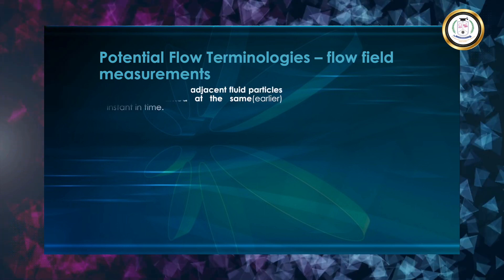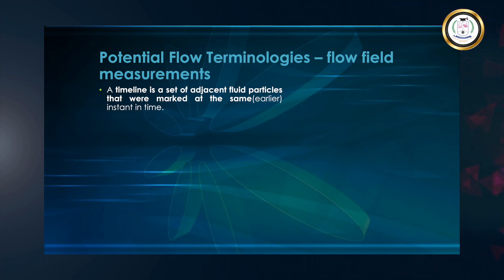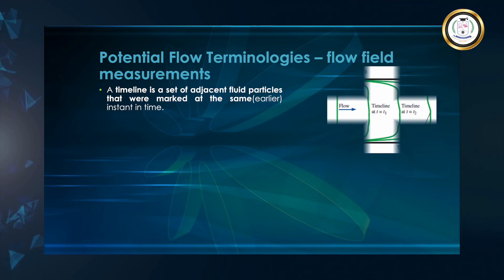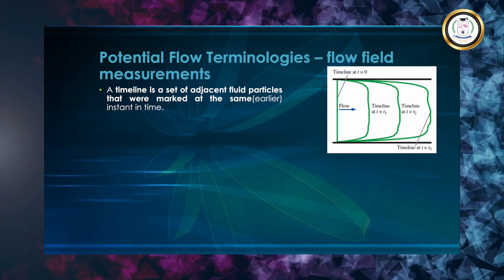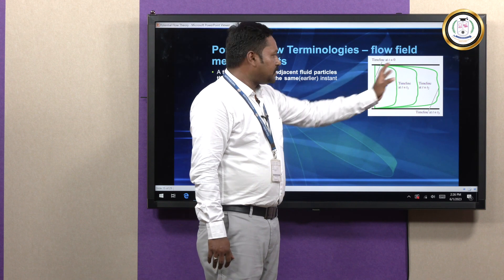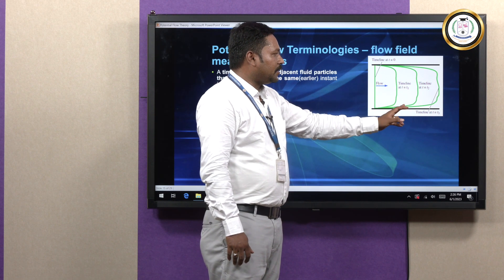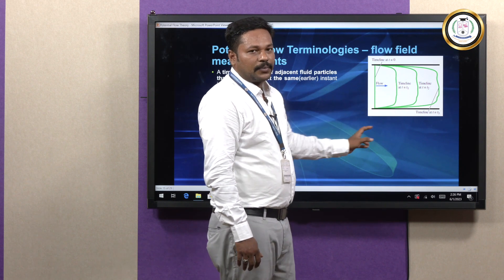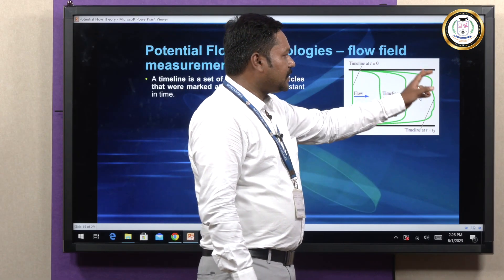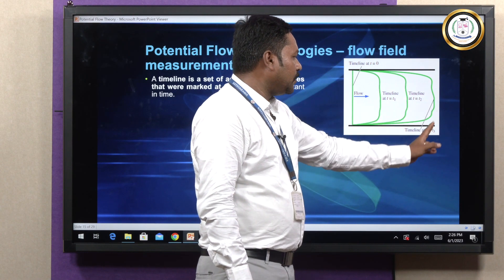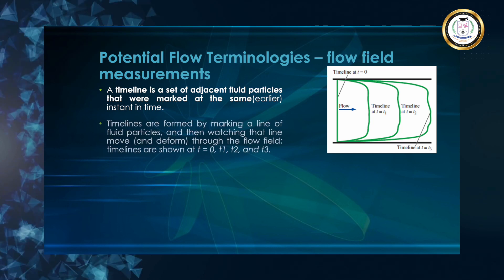About timeline — what is meant by timeline? It is nothing but the set of adjacent fluid particles that were marked at the same instant in time. Consider a pipe where fluid particles are flowing. Starting at timeline T equals 0, the flow is zero. At timeline T equals T1, the velocity profile is increasing. At T equals T2, the velocity profile is again increasing. At T equals T3, velocity is again increasing in this wave form.